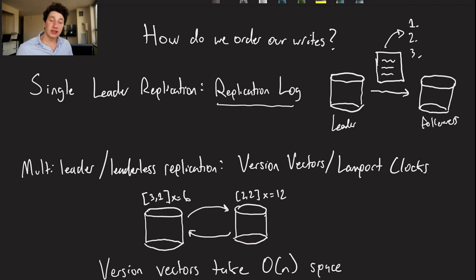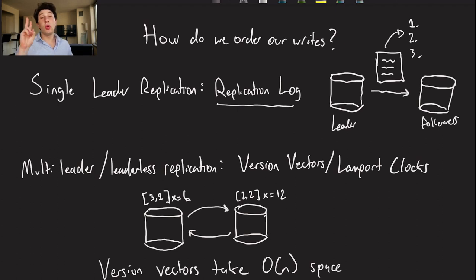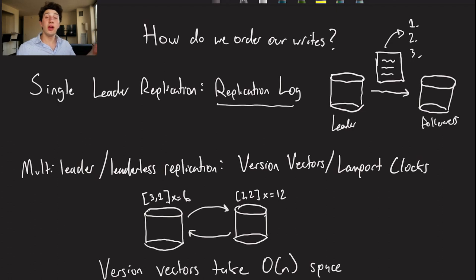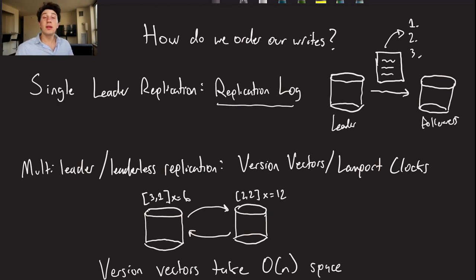What about multi-leader and leaderless replication? This is going to be more challenging because writes can go to a bunch of different places and we can have concurrent writes. We can't really establish a correct causal order, but we can establish an order that is consistent among the nodes — get all the nodes to agree on the ordering. How can we do that? We could use something like version vectors or a Lamport clock.